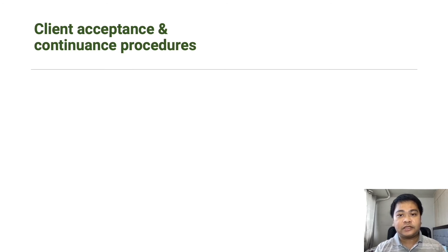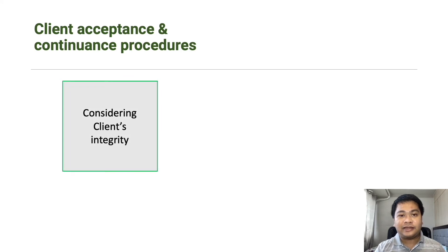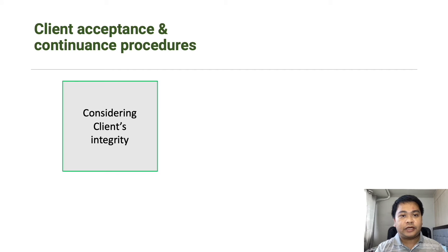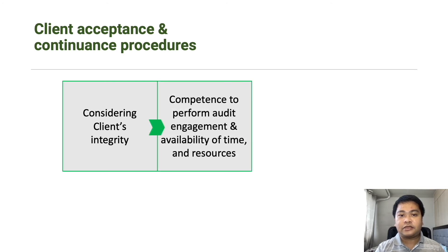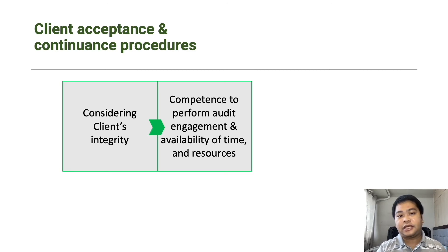During client acceptance and continuance procedures, we consider our client's integrity, since we cannot associate ourselves with clients who lack integrity. We check the background of the client, their officers, and their management — considering their behavior and past performance. We also consider the competence of the audit team: whether we have the availability, time, and resources to perform the engagement. It is a violation of our ethical requirements to accept an engagement for which we do not have the appropriate expertise or competence.